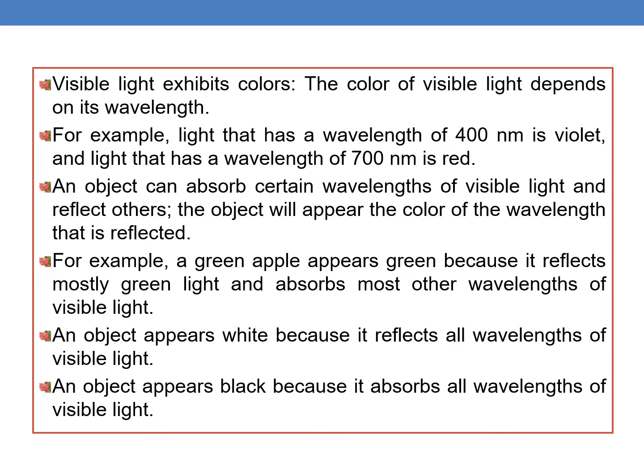An object can absorb certain wavelengths of visible light and reflect others, and the object will appear the color of the wavelength that it reflected. For example, a green apple appears green because it reflects mostly green light and absorbs most other wavelengths. An object appears white because it reflects all wavelengths of visible light, and an object appears black because it absorbs all wavelengths of visible light.